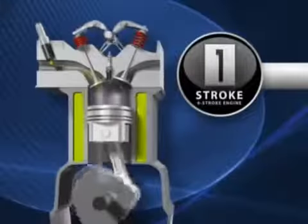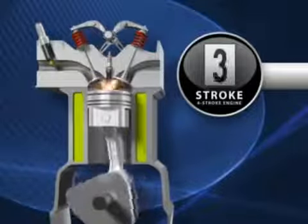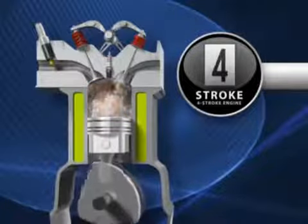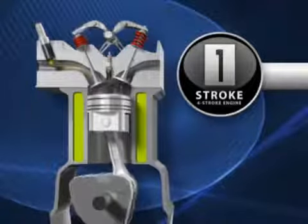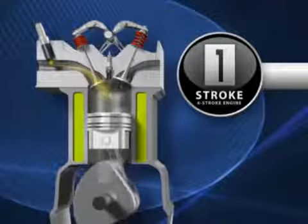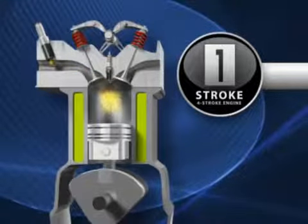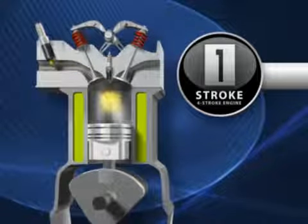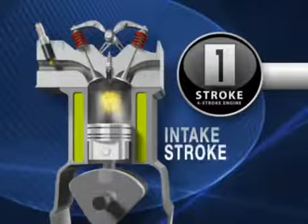A four-stroke engine is called a four-stroke because four up and down motions are needed to complete the cycle. In the first stroke, the piston travels downward as the intake valve opens, and a mixture of air from the atmosphere and a metered amount of gas from the electronic fuel injector enter the cylinder. This is called the intake stroke.